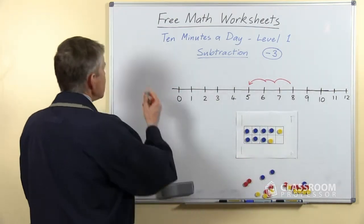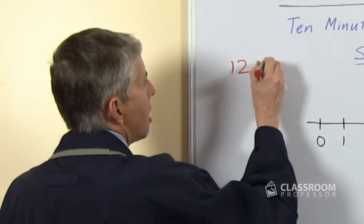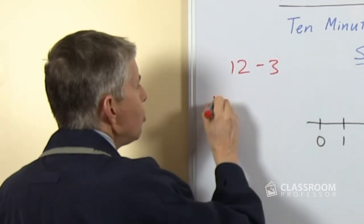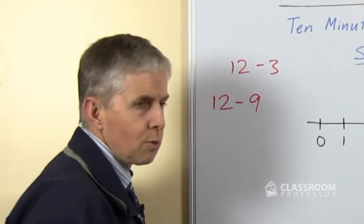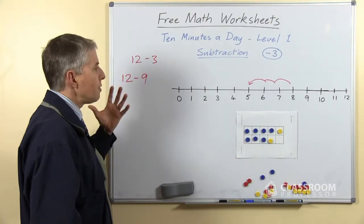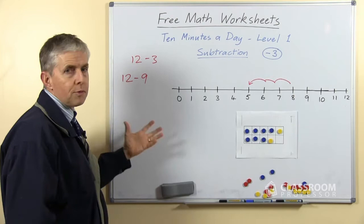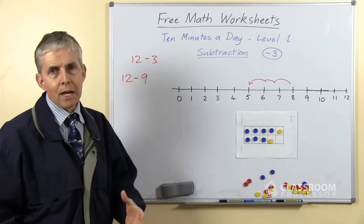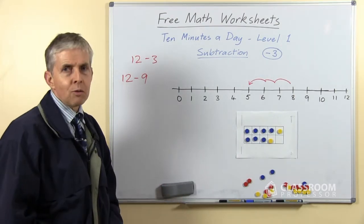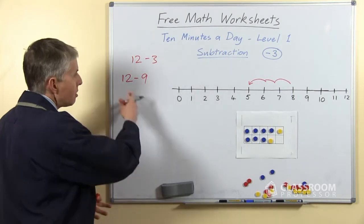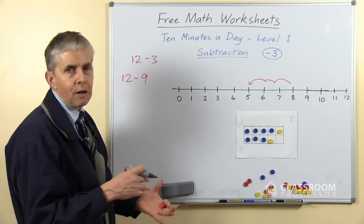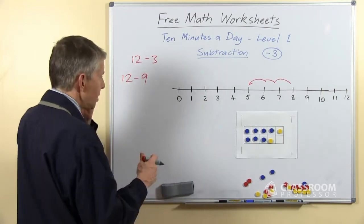That's fine when we have questions like 12 take away 3, but what would we do with a question like 12 take away 9? This is clearly more difficult — we don't immediately have the 3 to count backwards, and as I said, we're not going to count back 9. So we need another way of doing this, even though this is in the family of subtract 3 — it's a turnaround fact for 12 take away 3.